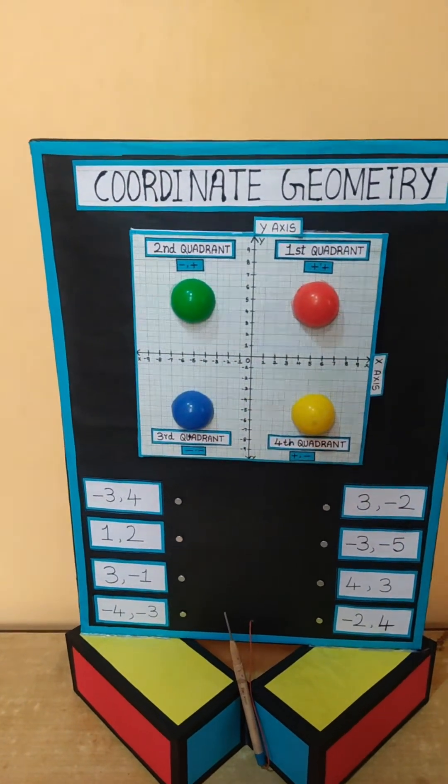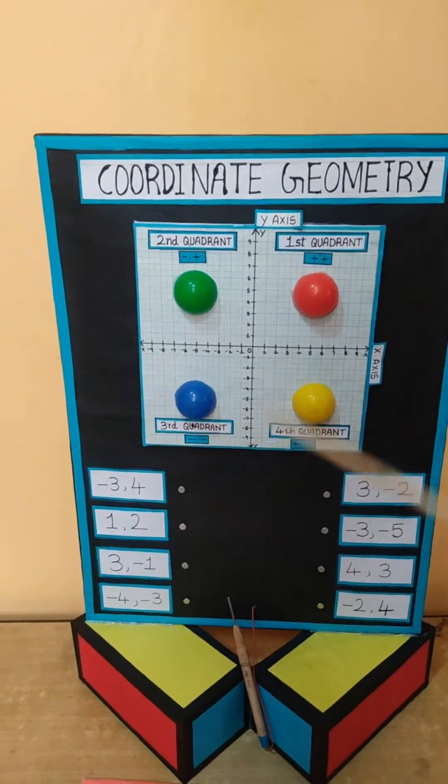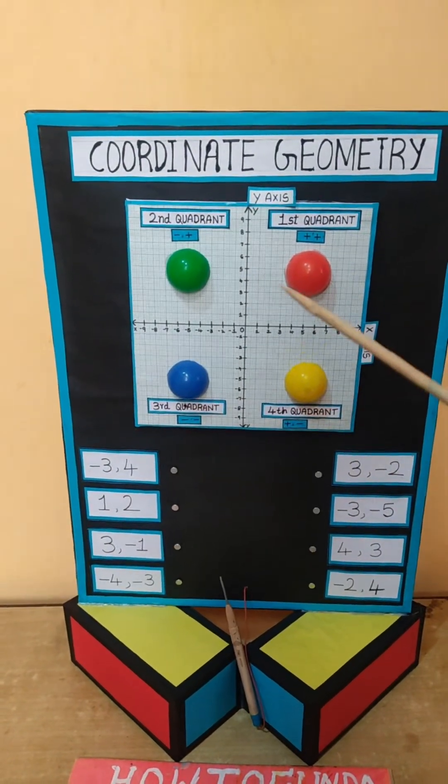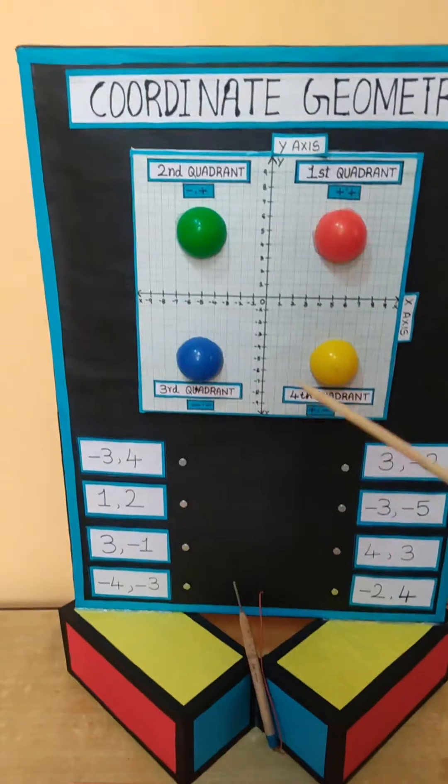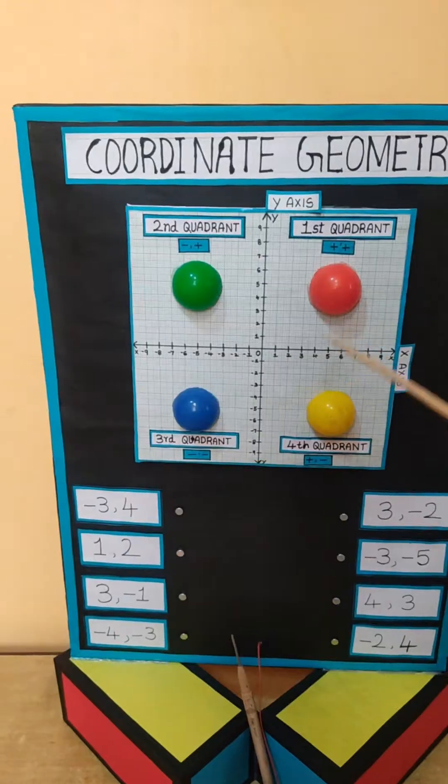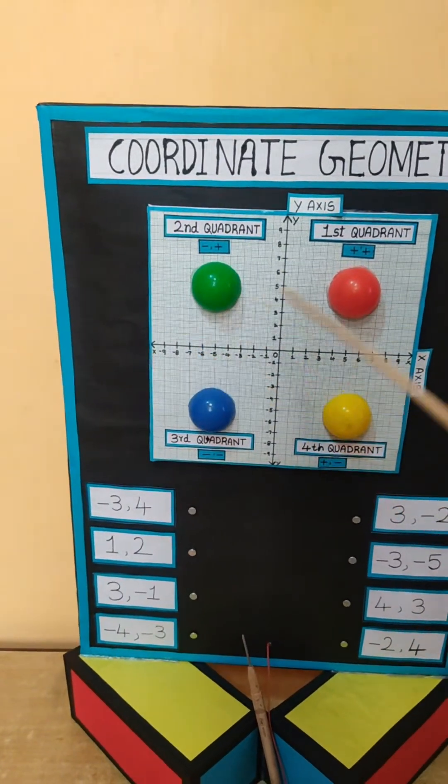What is coordinate geometry all about and what are the various coordinates we have in this working model? So basically, coordinate geometry has an x-axis and y-axis, and we have four quadrants here.